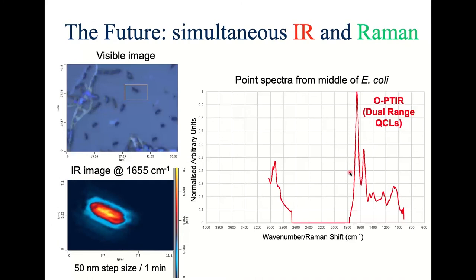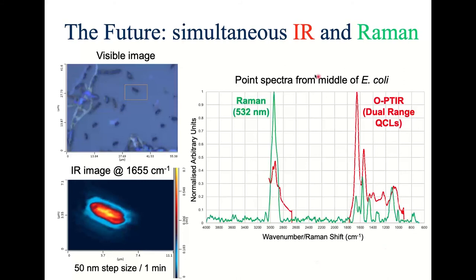The future will include simultaneous infrared and Raman spectroscopy on single bacteria. Here is an E. coli image with the IR image at 1655 cm⁻¹ acquired in about one minute. Sitting on the center of a single bacterium gives the OPTIR spectrum. Because the signal is read off with a 532 nm laser, a Raman spectrum can also be collected simultaneously. Overlaying both, you can get infrared and Raman spectra simultaneously from exactly the same location on a single bacterium.